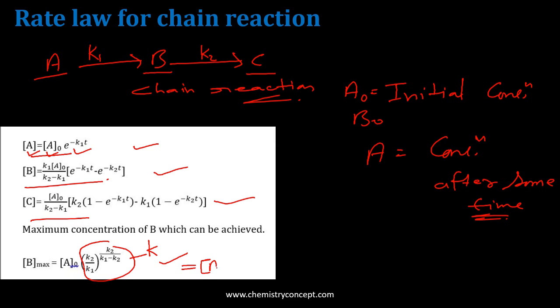As A naught, this is the initial concentration of reactant A, and the constant k, where k is the constant term. So we can replace by this one. These are the major four equations used in chain reactions.